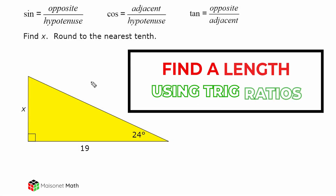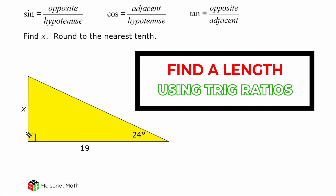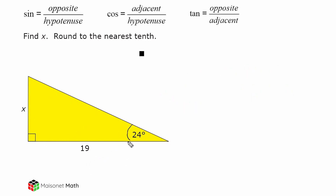In this problem, we have to figure out what the length of side x is of this right triangle, given the length of this side, which is 19 units, and the measure of this angle, which is 24 degrees. So let's figure out which one of these trig ratios we have to use in order to find the length of side x. One thing I would do as a beginner is label what each side of this triangle is relative to this angle.